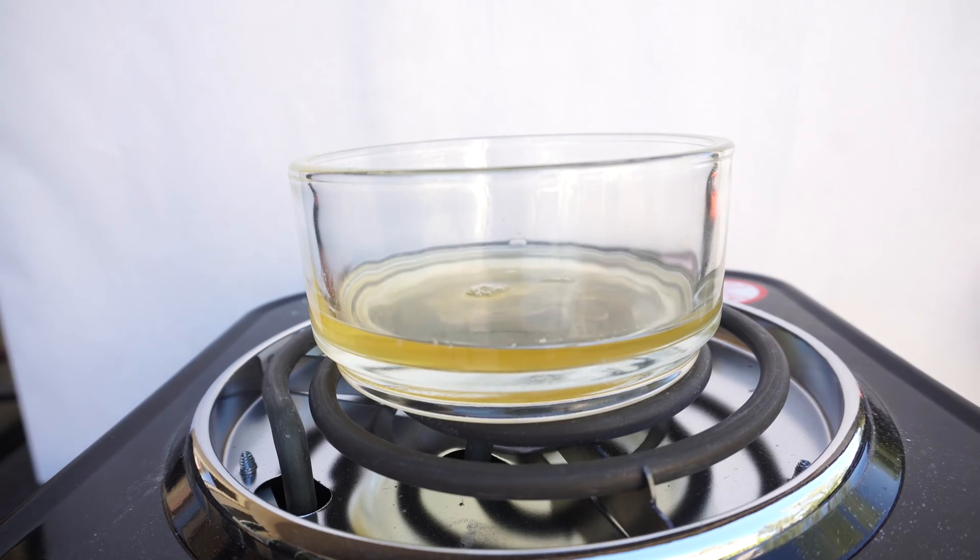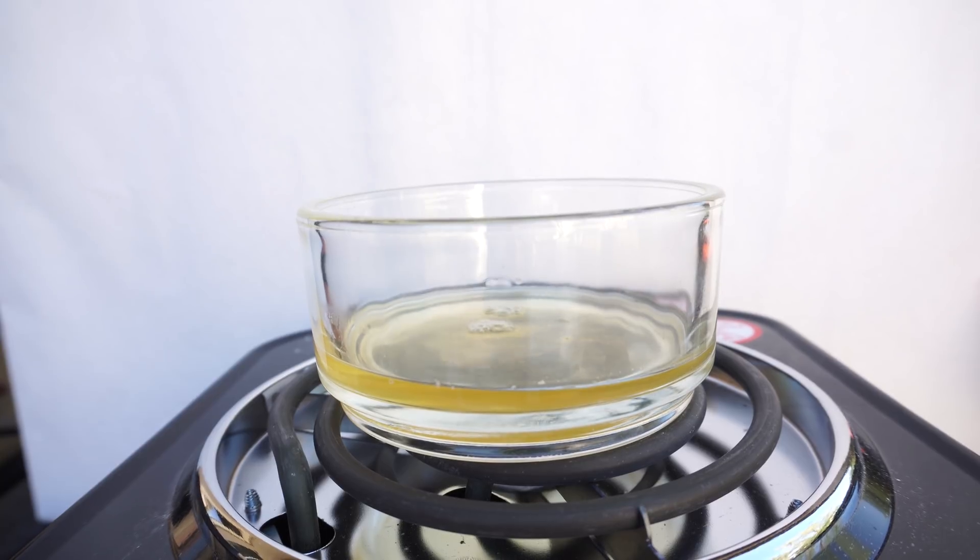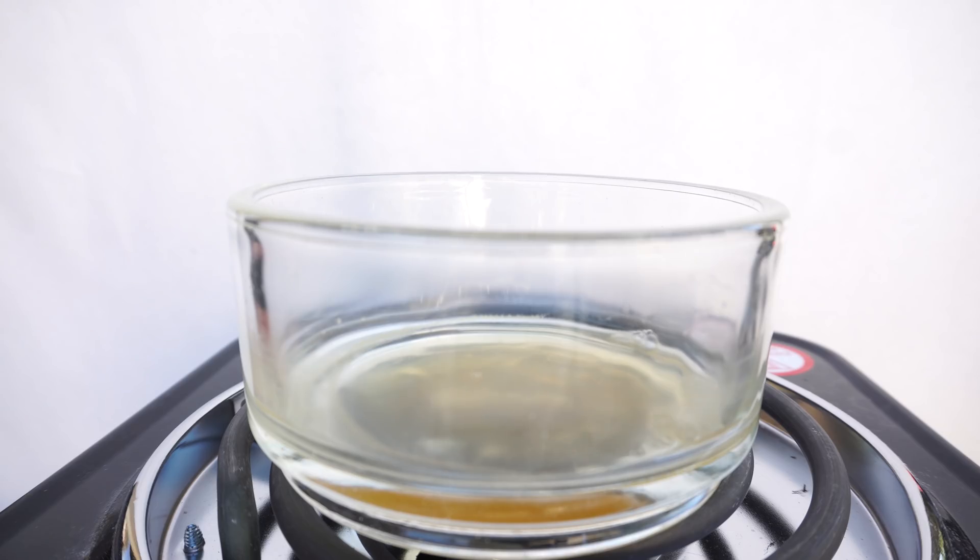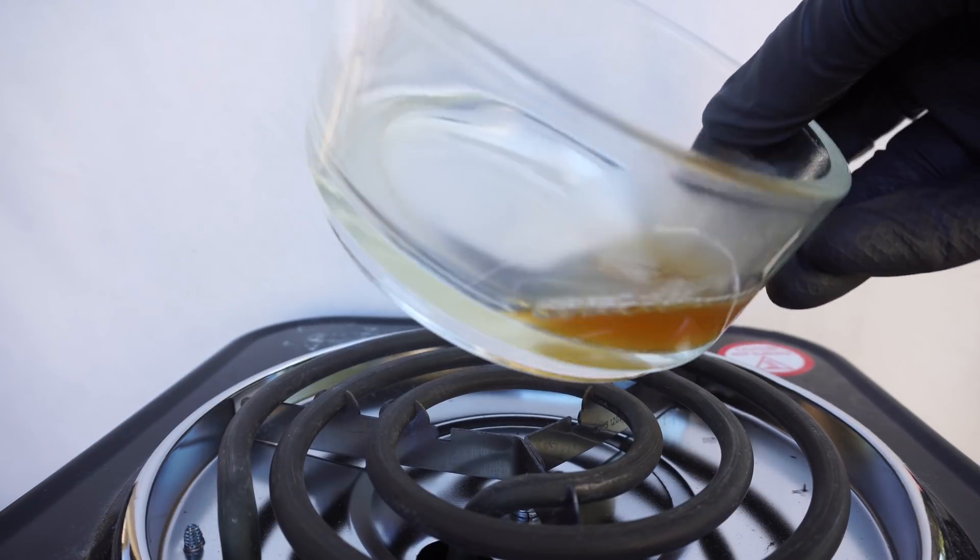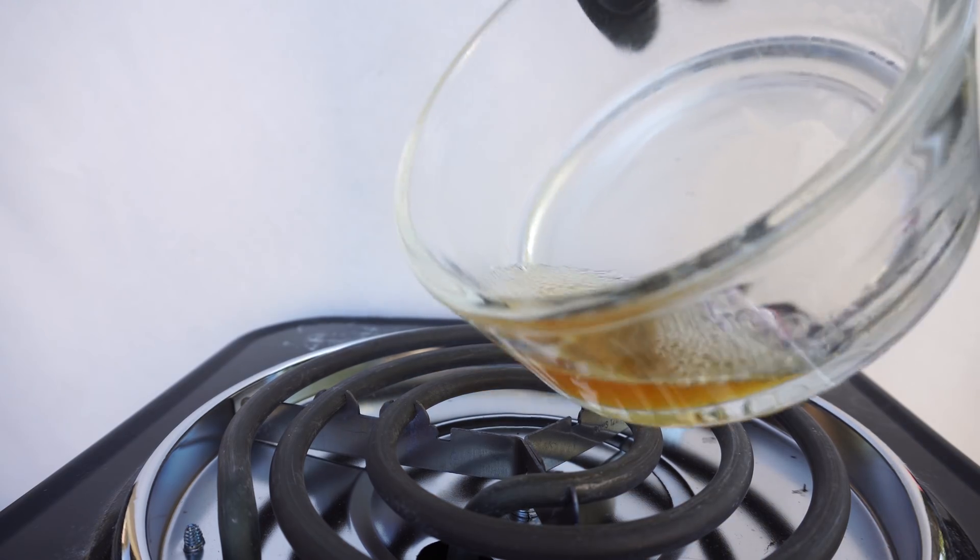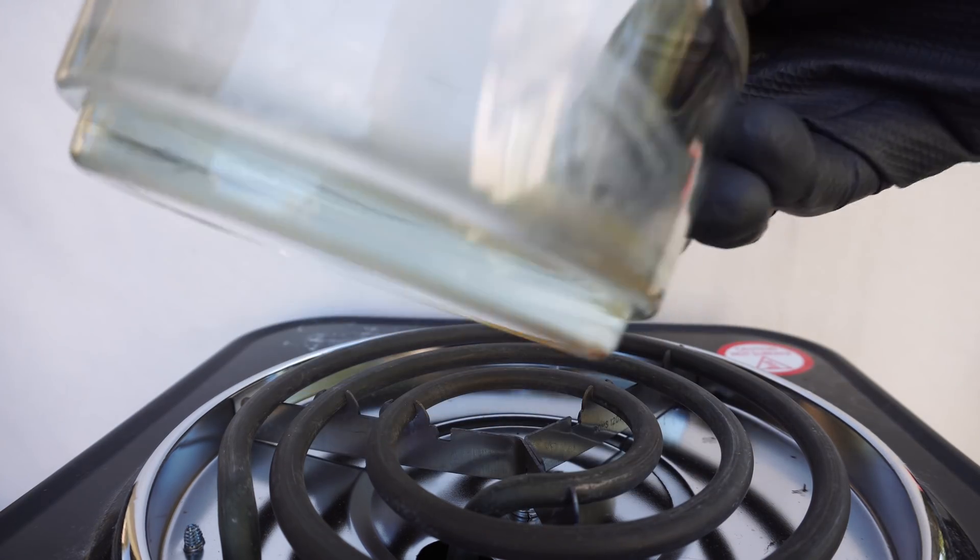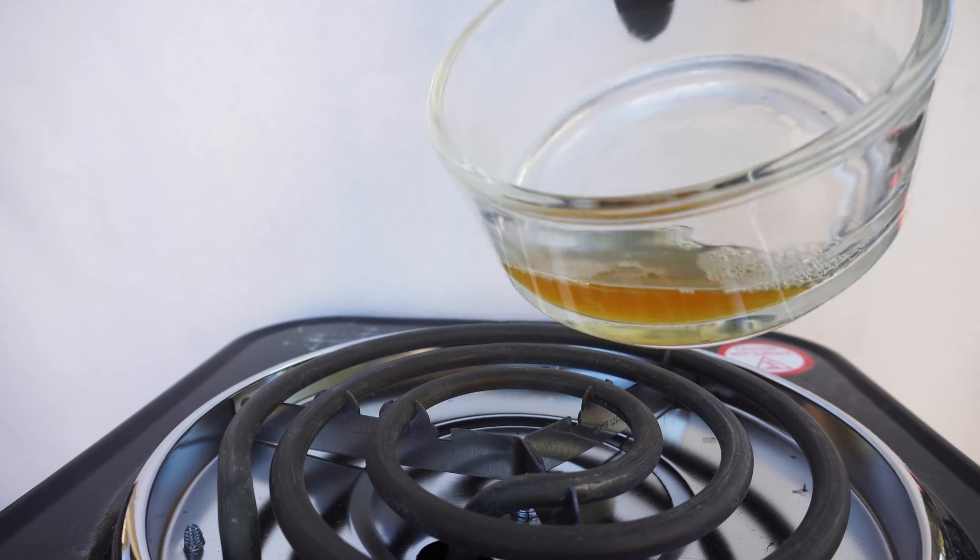From here, we will evaporate off the DCM. DCM boils at around 104 degrees, so it is better to take it slow. This will also make sure that the caffeine in the DCM doesn't burn as it evaporates, which is really easy to do. From my experience, anything more than a slow burn can actually burn the final product and you lose yield.